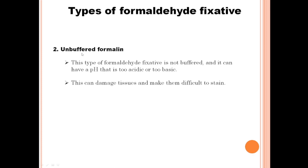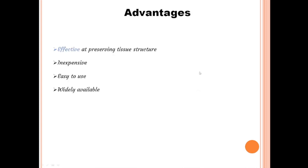Unbuffered formalin is not buffered and can have a pH that is too acidic or too basic. When formaldehyde dissolves in an unbuffered aqueous solution, it forms an acid solution with pH 5.0 to 5.5, because 5 to 10 percent of commercially available formaldehyde is formic acid. Acid formalin may react more slowly with proteins than neutral buffered formalin because amine groups become charged. Acid formalin also preserves immunorecognition much better than neutral buffered formalin; however, it can damage tissues and make them difficult to stain.